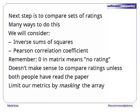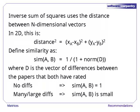Now let's look at our metrics. The inverse sum of squares metric uses the distance between two n-dimensional vectors, where n is the number of comparable ratings. In two dimensions, the distance is just the Pythagorean theorem. In higher dimensions, we add more terms, like (x_a - x_b) squared. A small sum of squares means the ratings are all nearly the same. Since we want a one to correspond to perfect agreement and a zero to correspond to complete disagreement, we invert the sum of squares. We add one to the denominator to achieve the desired range and to avoid division by zero.